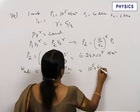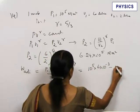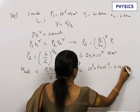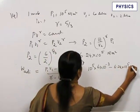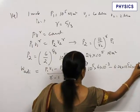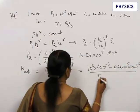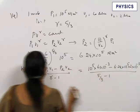V1 is 6 × 10^-3, P2 is 6.24 × 10^5, V2 is 2 × 10^-3, divided by 5/3 minus 1.